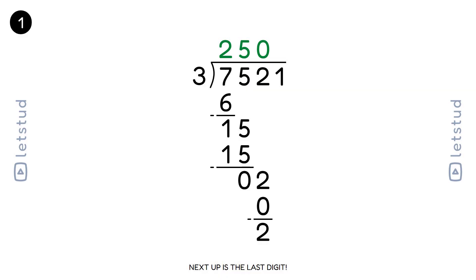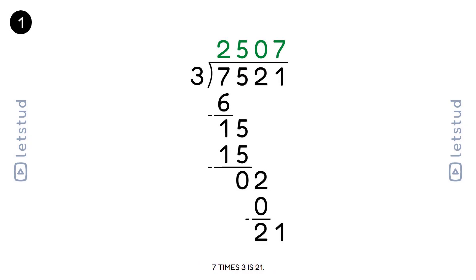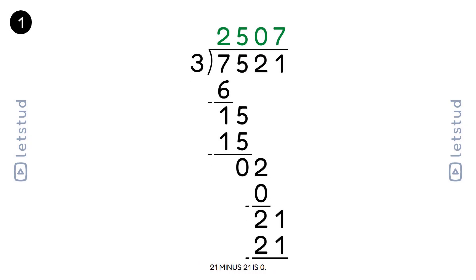Next up is the last digit. We have a remainder of 2. Bring down the next digit, 1, to make 21. 3 fits into 21 seven times. 7 times 3 is 21. 21 minus 21 is 0.